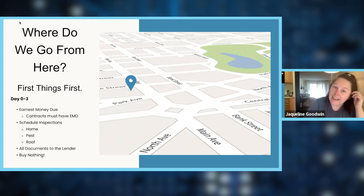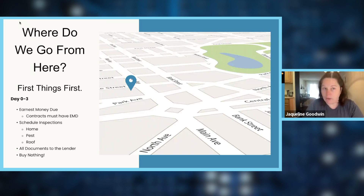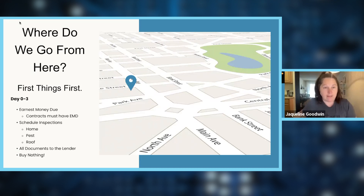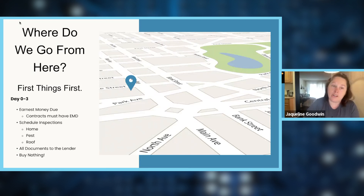You're going to hop on TypeForm and send in the form to let us know you're under contract. It's going to ask you details like if they want any inspections, who the title company is — it'll walk you through all the questions. You're also going to send an email to the team at C2 Realty and myself, and send over the contract with all signatures and any addendums, so we can get that started and out to all the different parties.